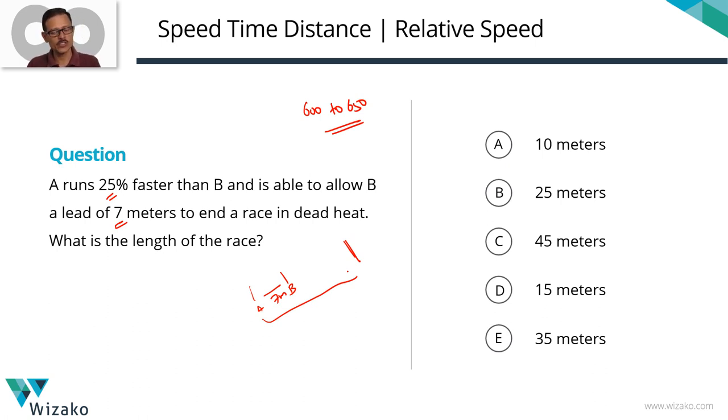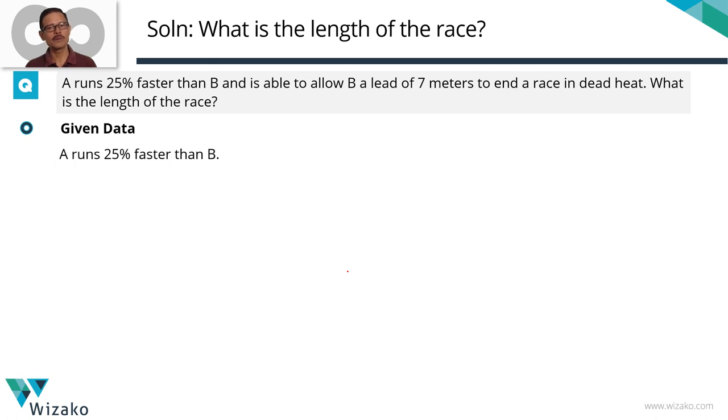Two key data given to us. Let's start with the first one. It says A runs 25% faster than B, which essentially means that if B runs 100 meters in a given time, A will run 125 meters in the same time. That's what running 25% faster than B essentially means.